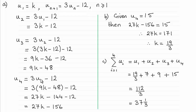And then repeat the process again, setting n equal to 3 for u4, and you get 3u3 minus 12. Substitute what u3 is in to here, expand and simplify.